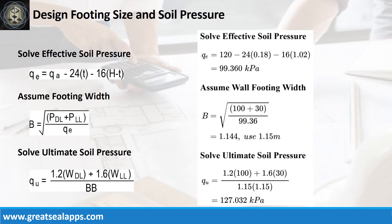Given allowable soil pressure equals 120 kPa, depth from natural grade line equals 1,200 mm, and assumed footing depth equals 180 mm. The effective soil pressure is 99.36 kPa. Given actual dead load equals 100 kN and actual live load equals 30 kN, the footing width is 1.15 meters, and the ultimate soil pressure is 127.032 kPa.